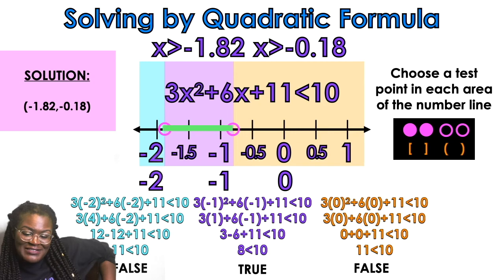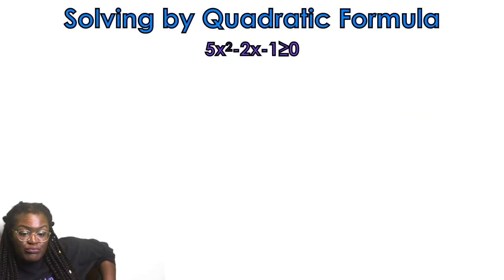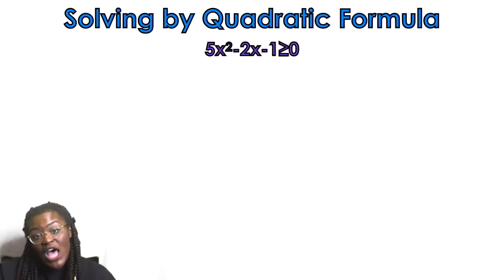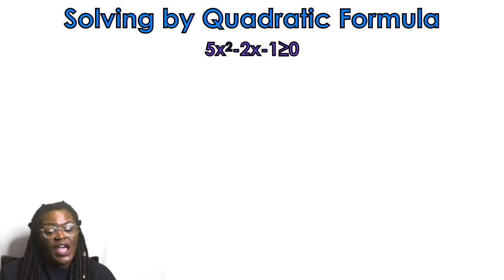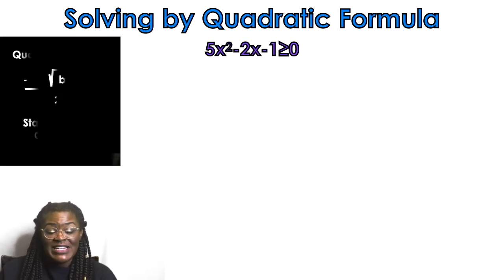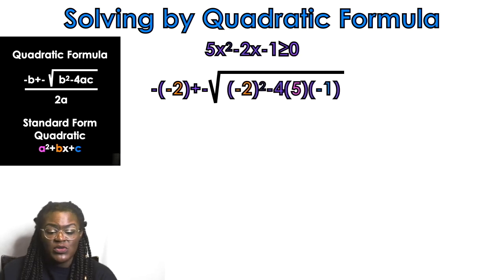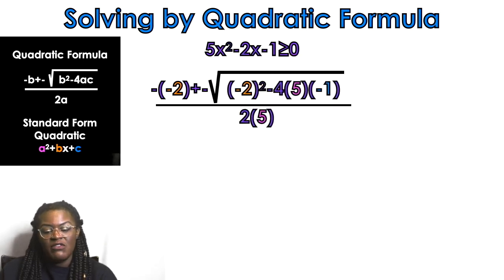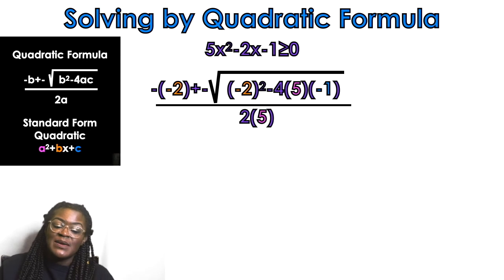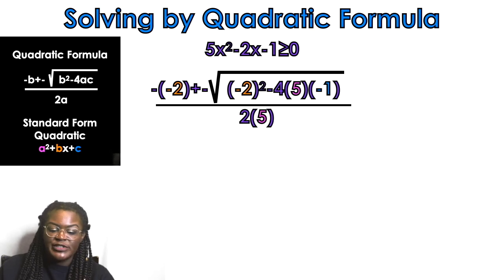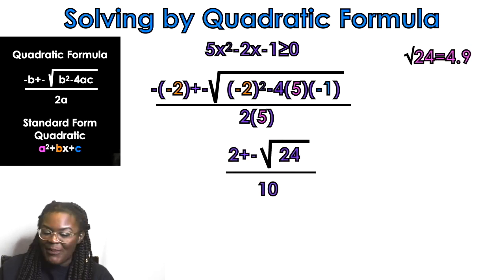One more example — you should pause the video and try this one on your own first. This example is already set equal to 0. Plug into the quadratic formula: negative negative 2, plus or minus the square root of negative 2 squared minus 4 times a (which is 5) times c (which is negative 1), all over 2 times 5.